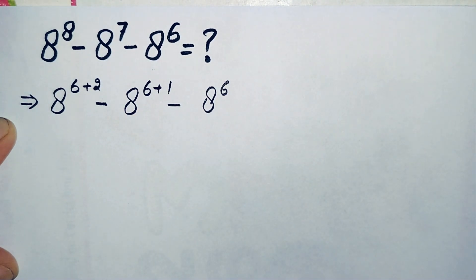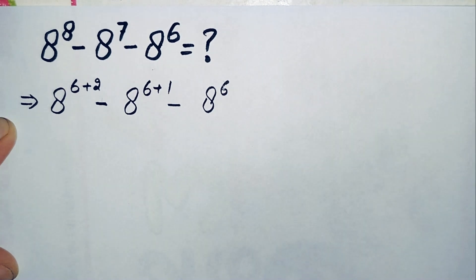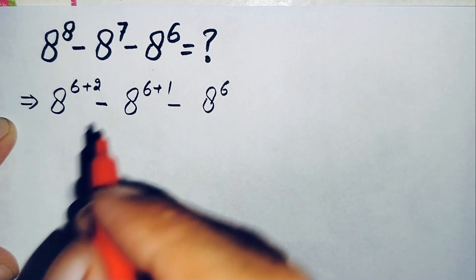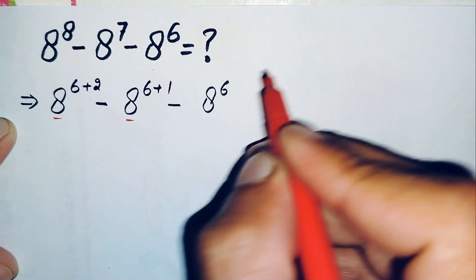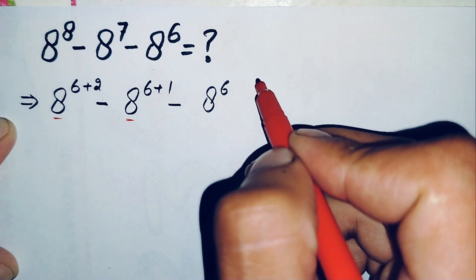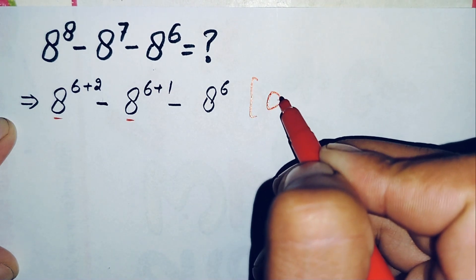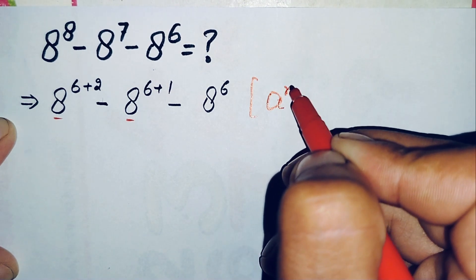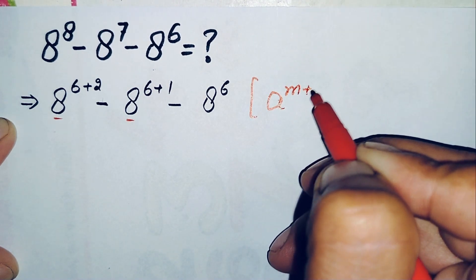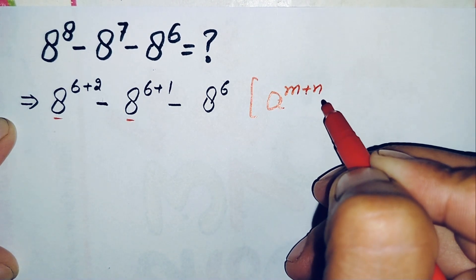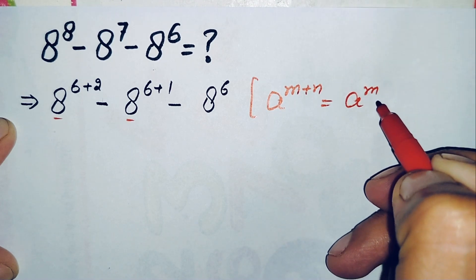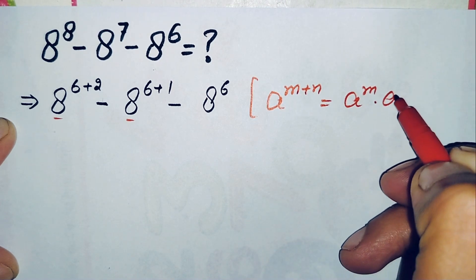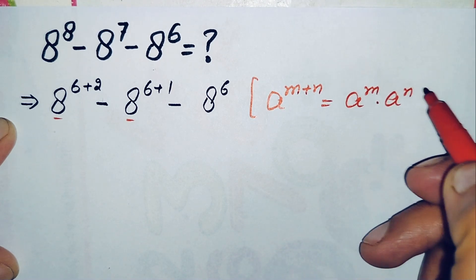Now in the first two terms we will use an exponential math property. The property is: a raised to power m plus n can also be written as a raised to power m times a raised to power n.